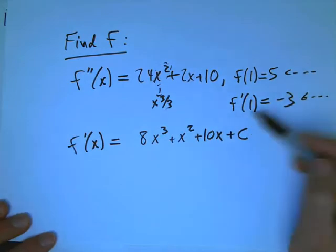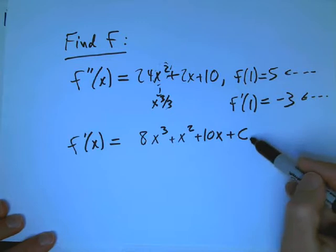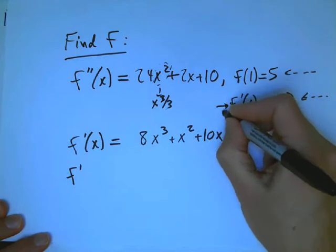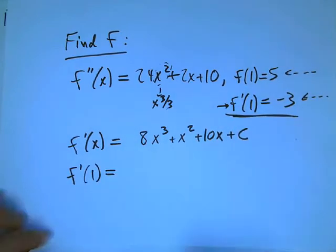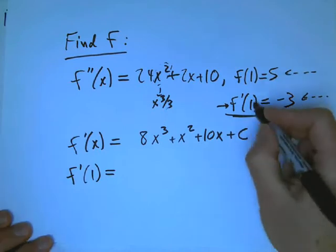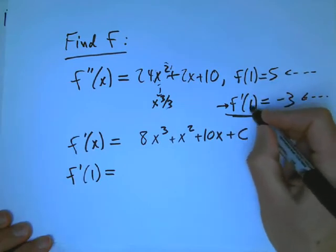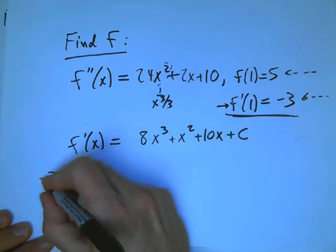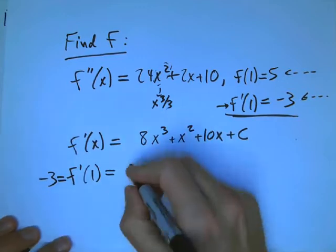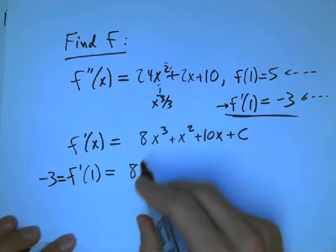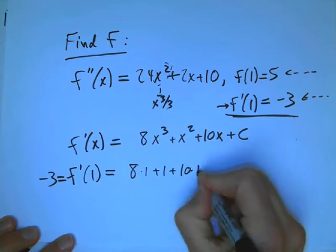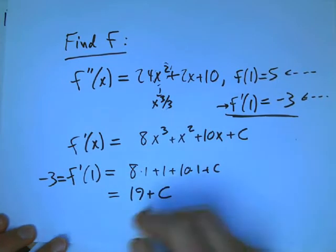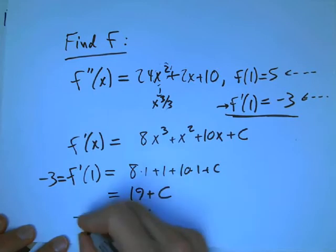Now, in general, if we didn't have this information, we'd have to just leave that c alone. But we immediately say, hey, wait a minute. I know something about f prime of 1. It says when x is 1, we're going to plug in x equals 1. Then that should be equal to minus 3. So minus 3 is what you get when you plug in x equals 1. So that's 8 times 1 plus 1 plus 10 times 1 plus c. Or in other words, 19 plus c. And so I can solve that. c is minus 3 minus 19, so minus 22.